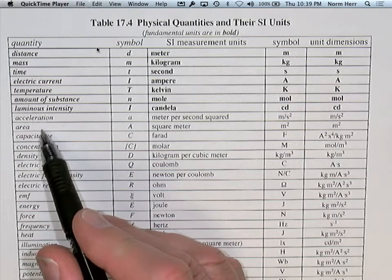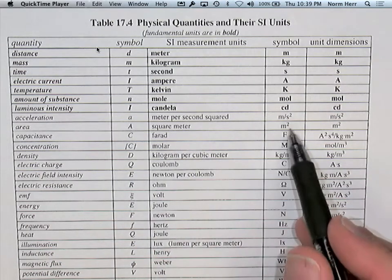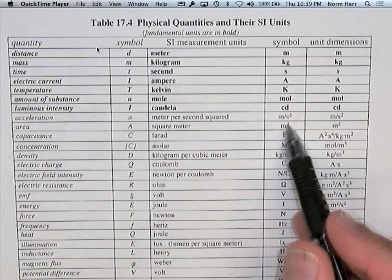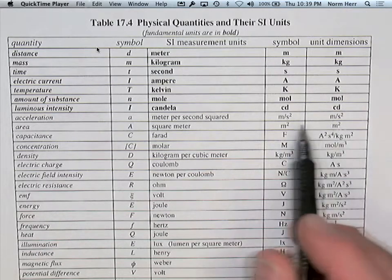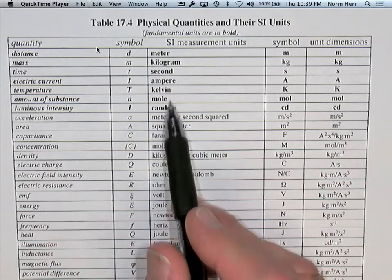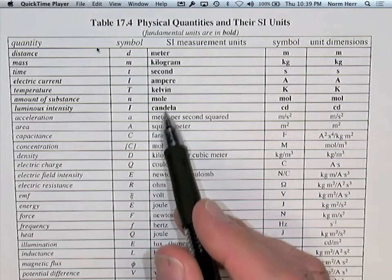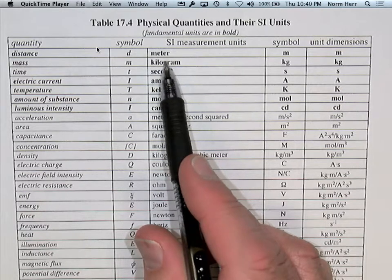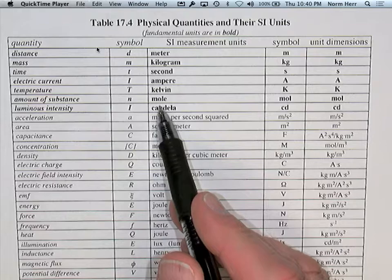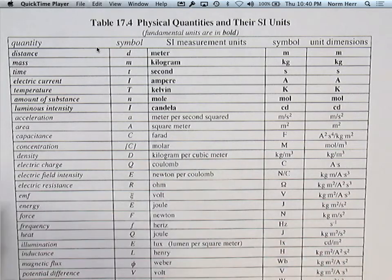If you look at area, it is not a fundamental unit because it can be expressed as distance squared, expressed in SI units as meters squared. Everything above the line is a fundamental unit; everything below is a derived unit. The fundamental units are like the letters of the alphabet — the most important things to know, because you can rearrange these to create the derived units used for measuring in science.